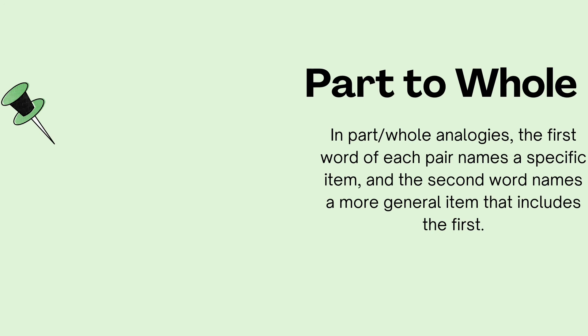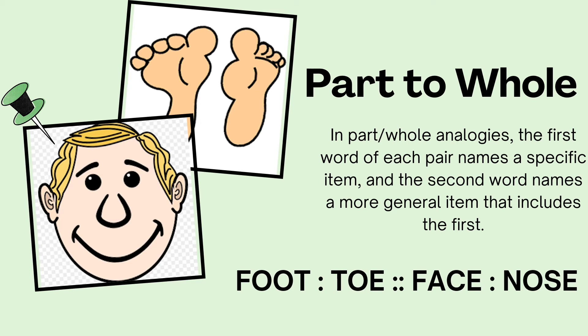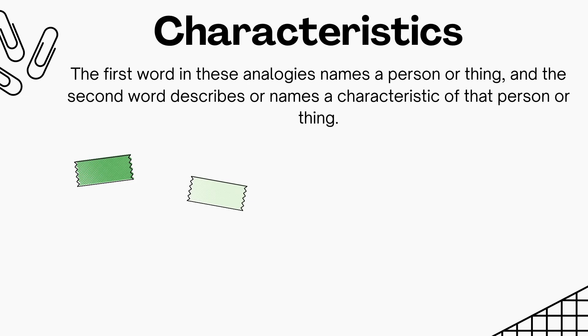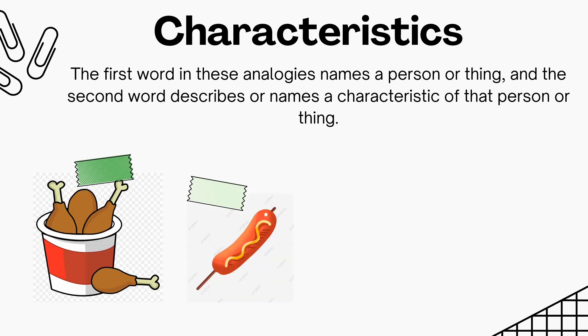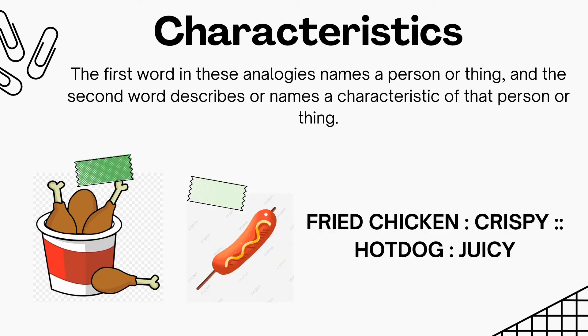The next one is part to whole. In part-to-whole analogies, the first word of each pair names a specific item, and the second word names a more general item that includes the first. For example, foot is to toe as face is to nose. The last one is characteristics. The first word in these analogies names a person or thing, and the second word describes or names a characteristic of that person or thing. For example, fried chicken is to crispy as hot dog is to juicy.